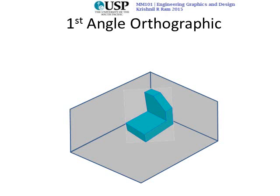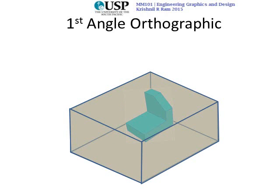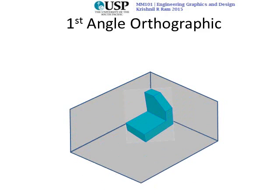Let's look at first angle orthographic projection. Imagine this object here encased in a glass box. A projection is the image of the 3D object projected onto the plane, as discussed in part one. In first angle projection, we draw the projection on the furthest plane from the view. For the front view, you look from one side and draw onto the plane on the other side.